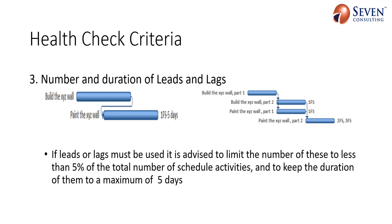The next rule is about leads and lags, and you should avoid using leads and lags in your schedule. A lead is an overlap between activities in a relationship, and a lag is a compulsory delay between two activities. The number of activities having leads and lags should be less than five percent of the total number of project activities, and the duration should also be less than five days.